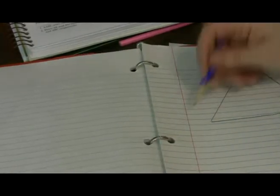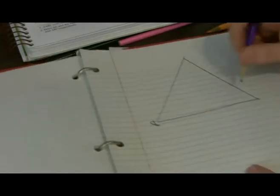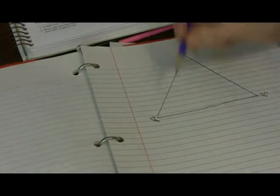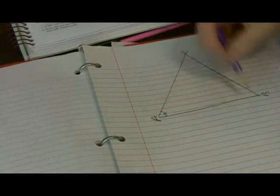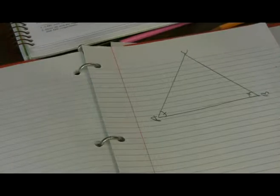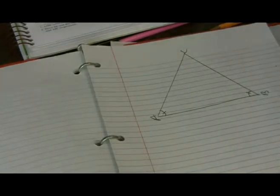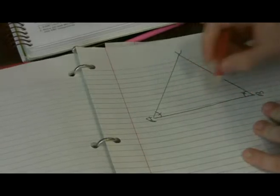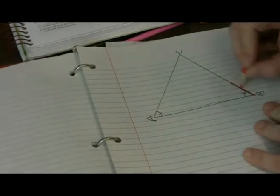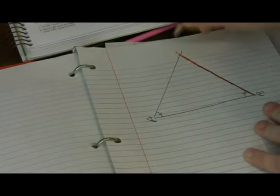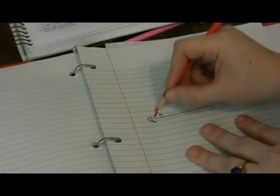Okay, so we have triangle A, B, C and we're given that angle ABC is equal to angle BAC. What we're trying to prove is that line BC is equal to AC. Let me color this with my colored pencils.